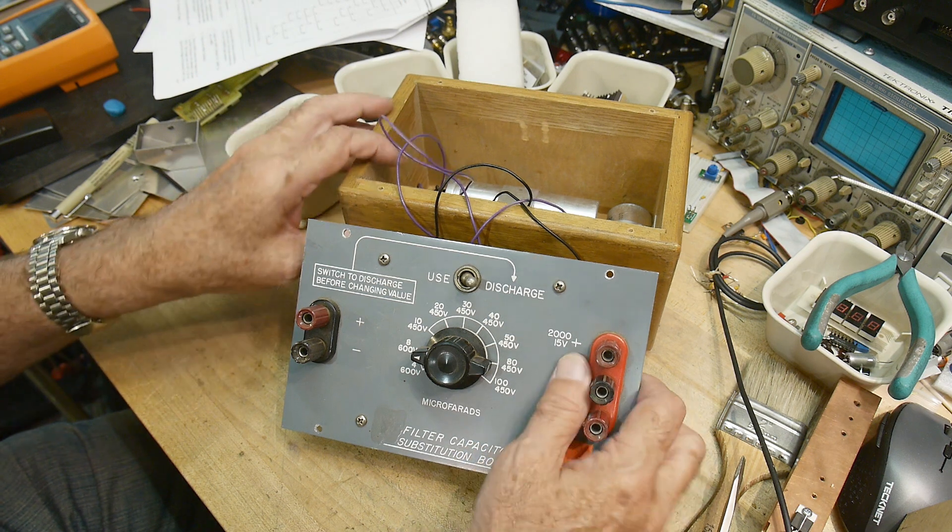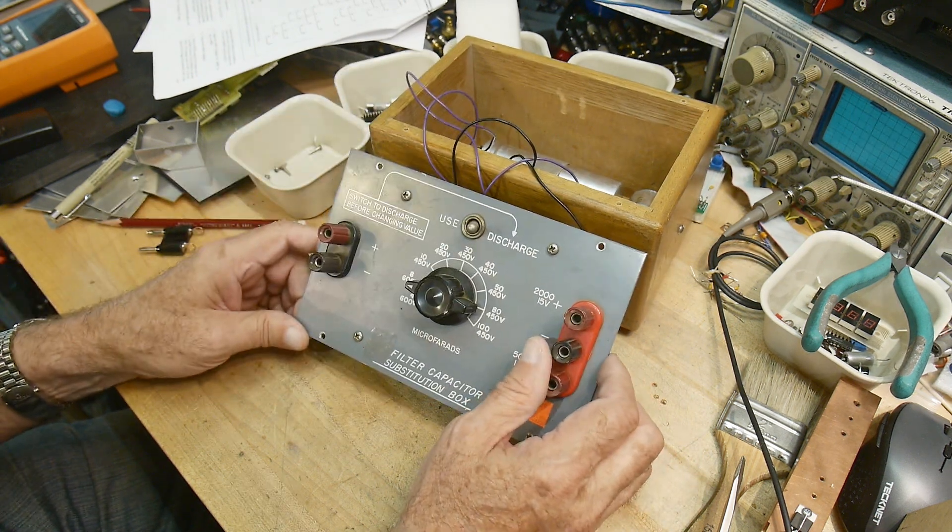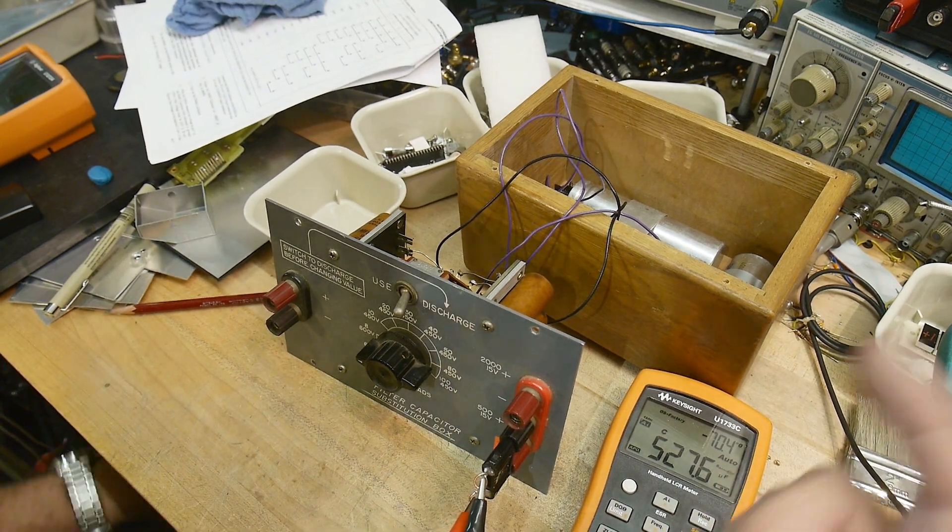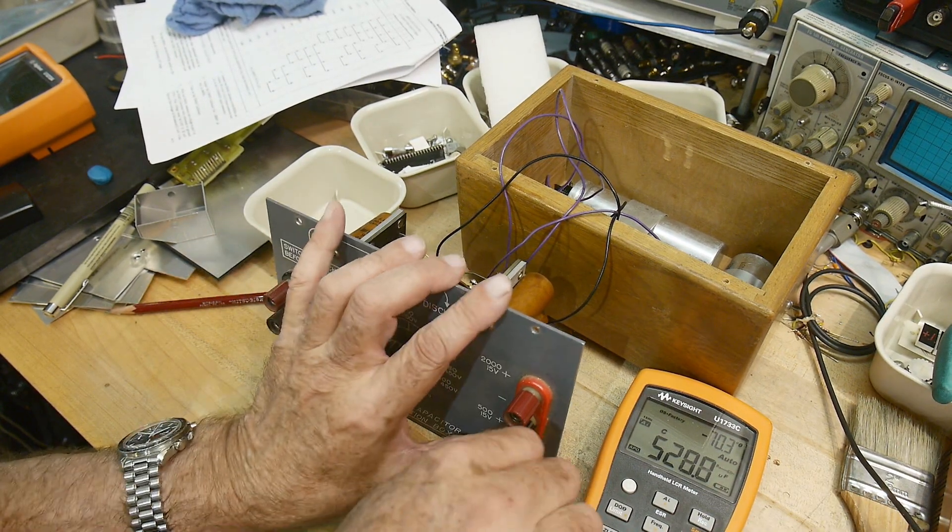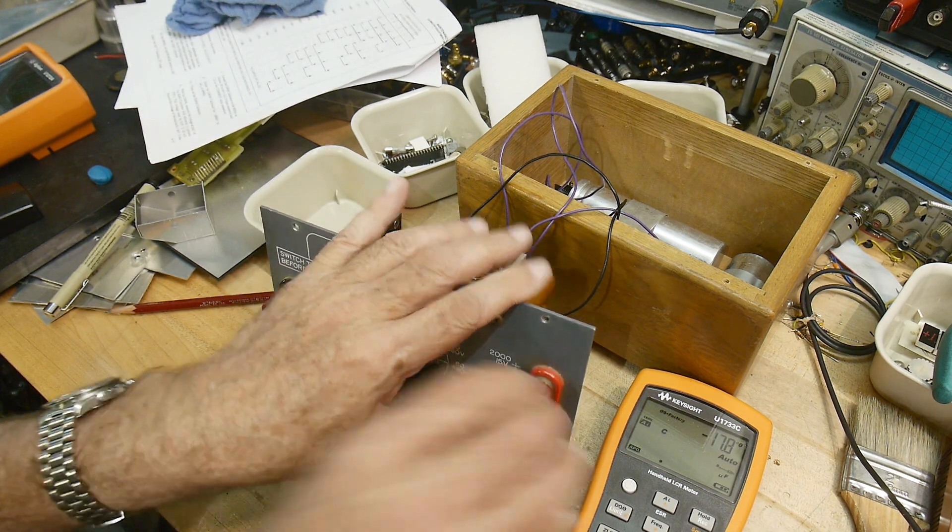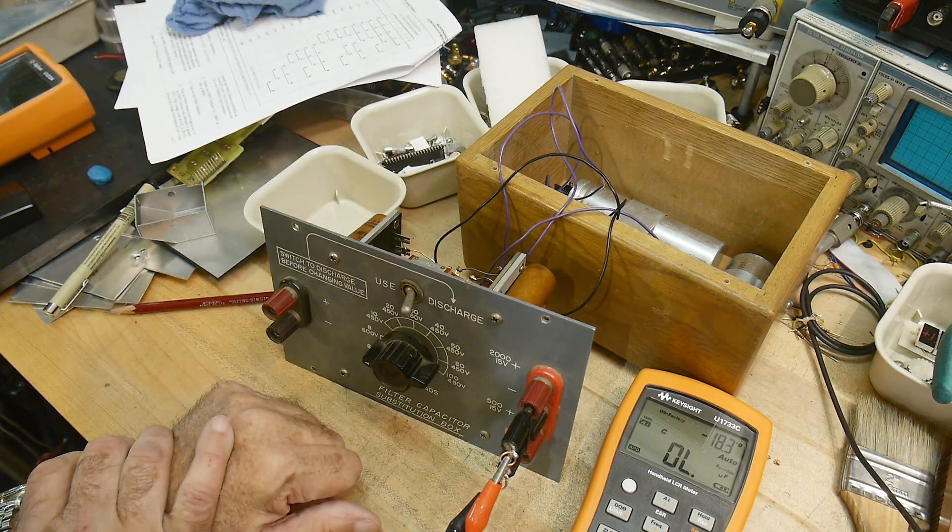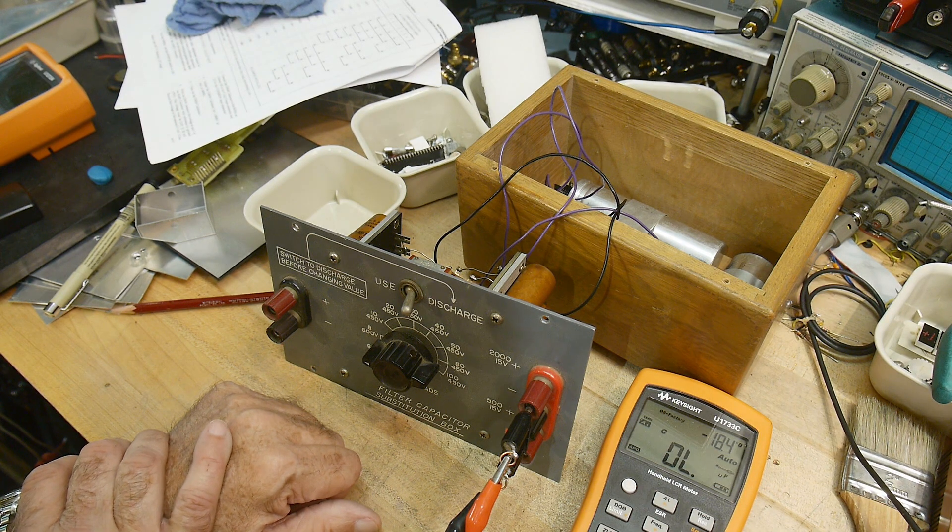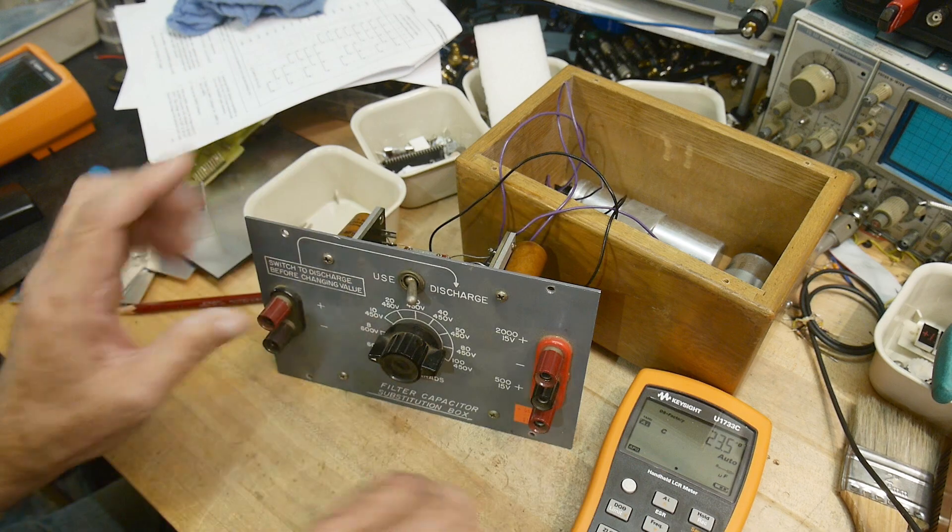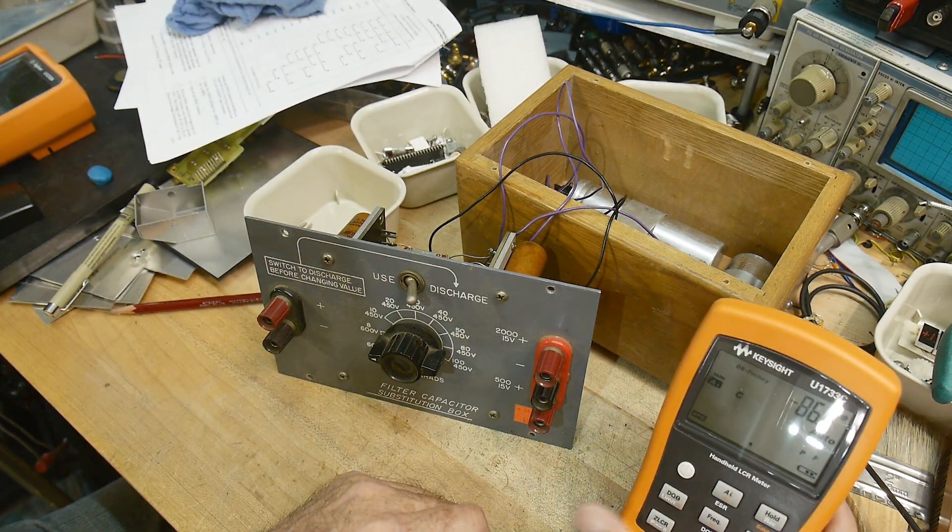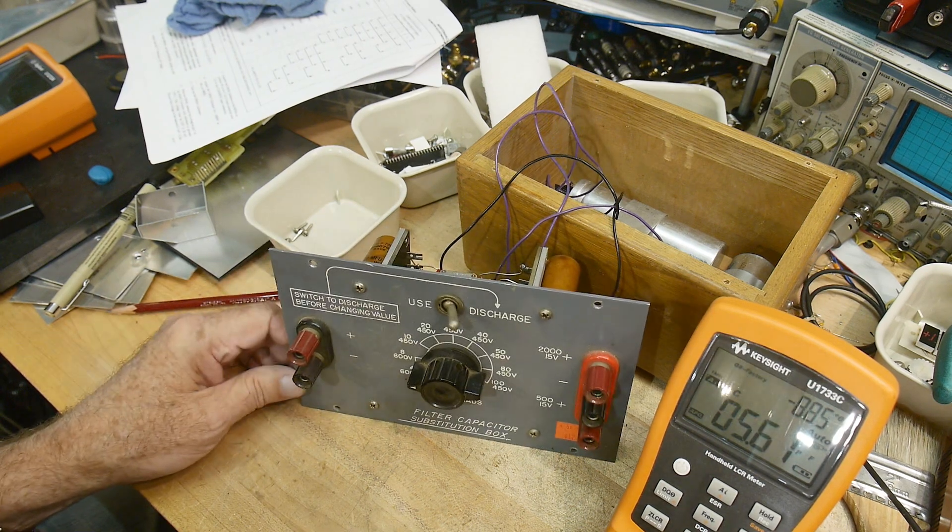Let's get out a capacitance meter and see if we have any capacity left. 500 microfarads - okay, that one works. And how about just the one 2000? Nope. Or it's bigger than this meter can measure. I'm not sure what's the largest capacitance this can measure.